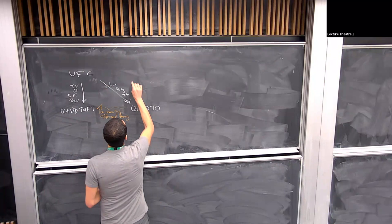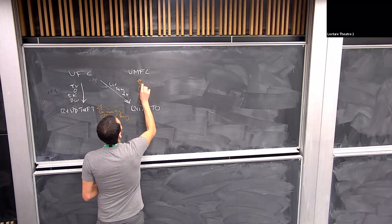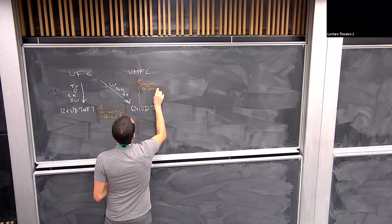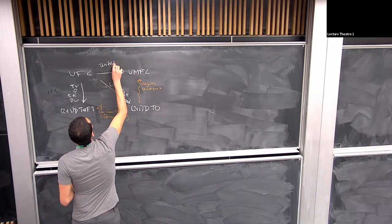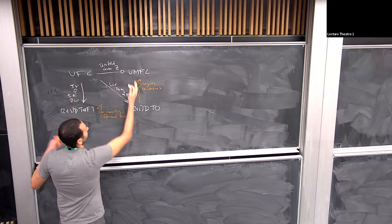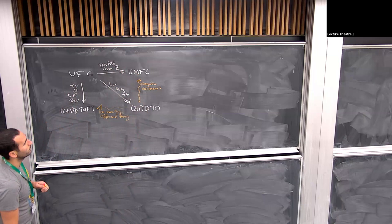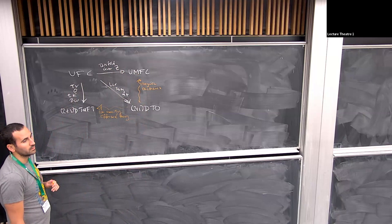Physicists also say the low-energy excitations form the unitary modular fusion category — the anyonic excitations. There's another construction starting with the unitary fusion category that gives you one of these, called the Drinfeld center. The white arrows are rigorous constructions; the orange arrows signify physics — perhaps less rigorous, but you know it when you see it.